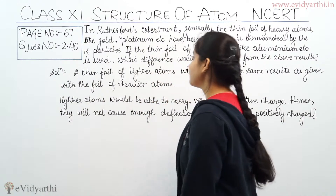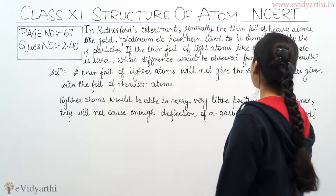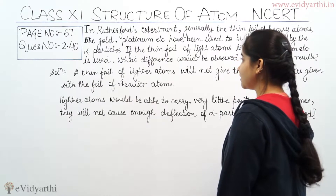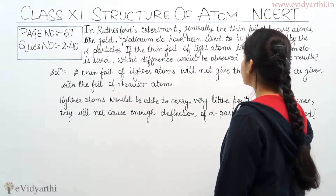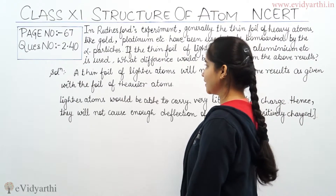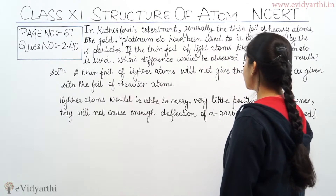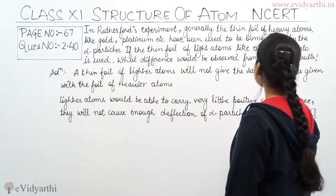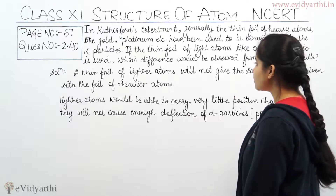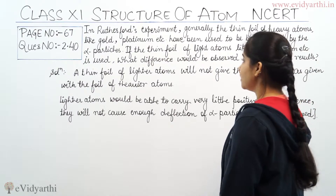The question is: in Rutherford's experiment, generally the thin foil of heavy atoms like gold, platinum, etc. have been used to be bombarded by the alpha particles. If the thin foil of light atoms like aluminium, etc. is used, what difference would be observed from the above results?